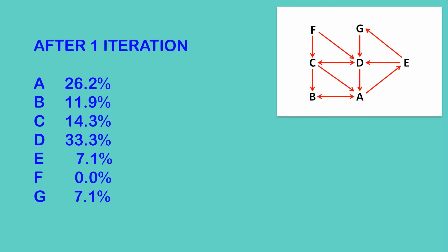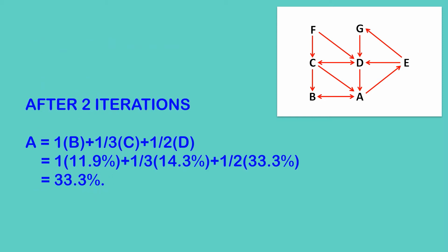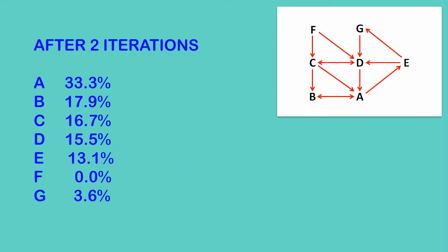So here's a full list of the importance rankings after one iteration. A is 26.2%, B is 11.9%, and on we go right through to G, which is 7.1%. So now we can do a second iteration. For A, here are the calculations, and we'll get 33.3%. The full list is now as you can see here. We have A at 33% through to G at 3.6%.